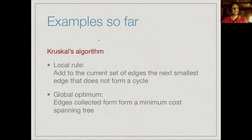Another algorithm for the minimum cost spanning tree is Kruskal's algorithm. Here we don't build up a tree directly, but rather keep collecting edges to form a connected component which becomes a tree. We keep adding to the current set of edges the next smallest edge that doesn't form a cycle with those already chosen. The global optimum is that the edges collected in this way form a minimum cost spanning tree.